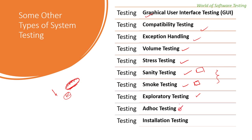Ad hoc testing is an informal testing approach where no documentation or planning is done to test the application. The tester tests without any test cases — the aim is to break the application. The tester uses experience, intuition, and judgment to find critical issues. Ad hoc testing helps find hidden issues in the application.